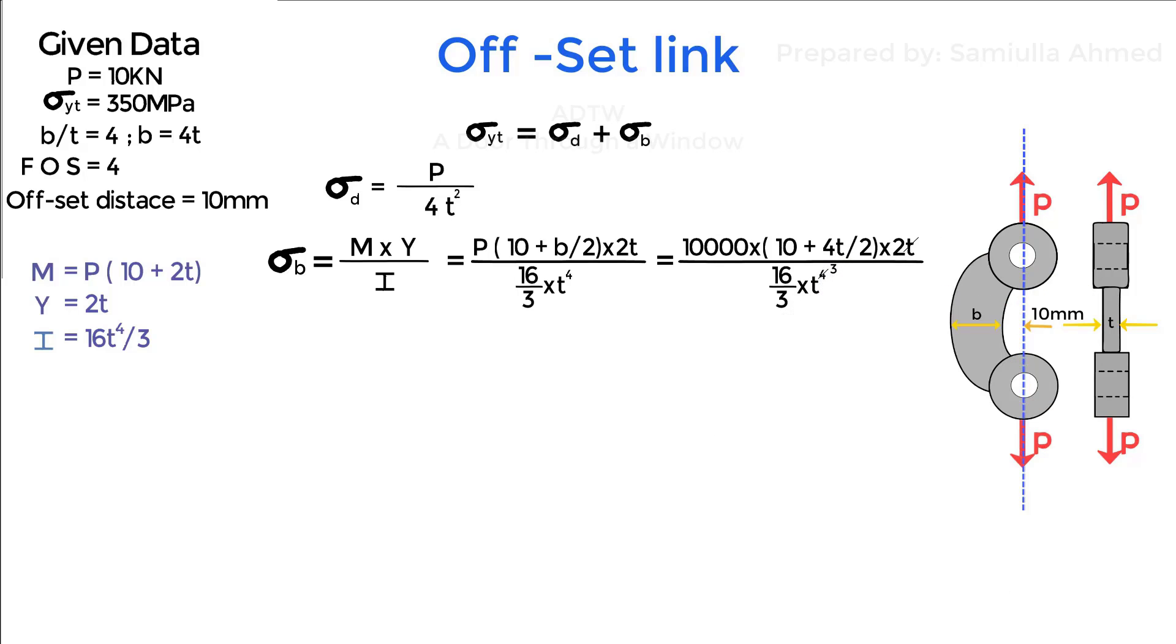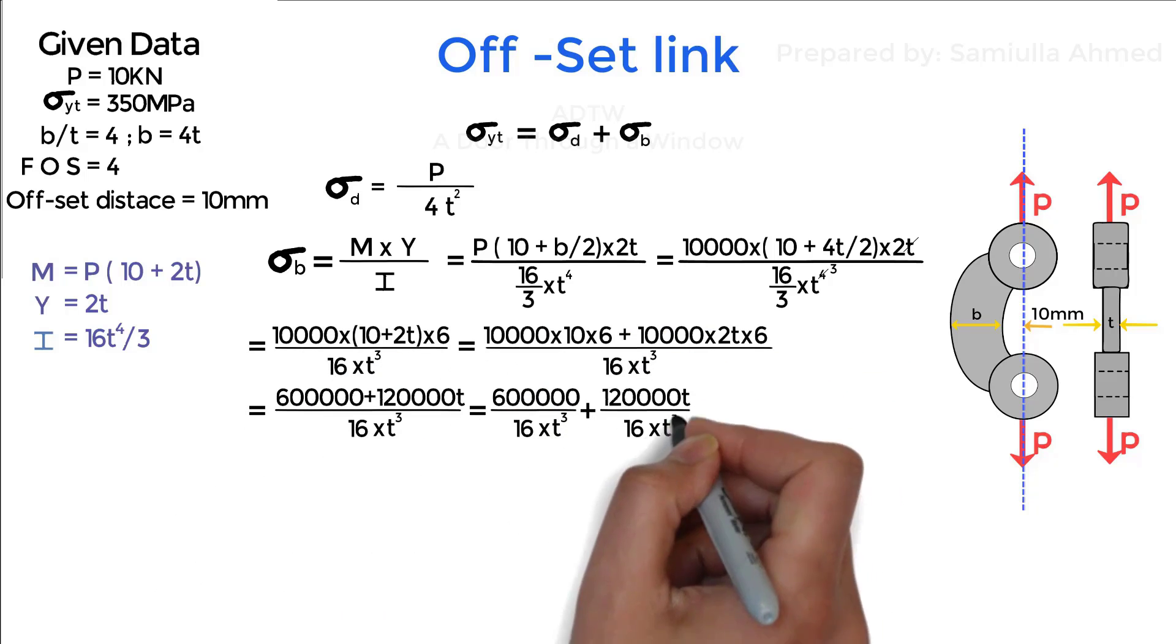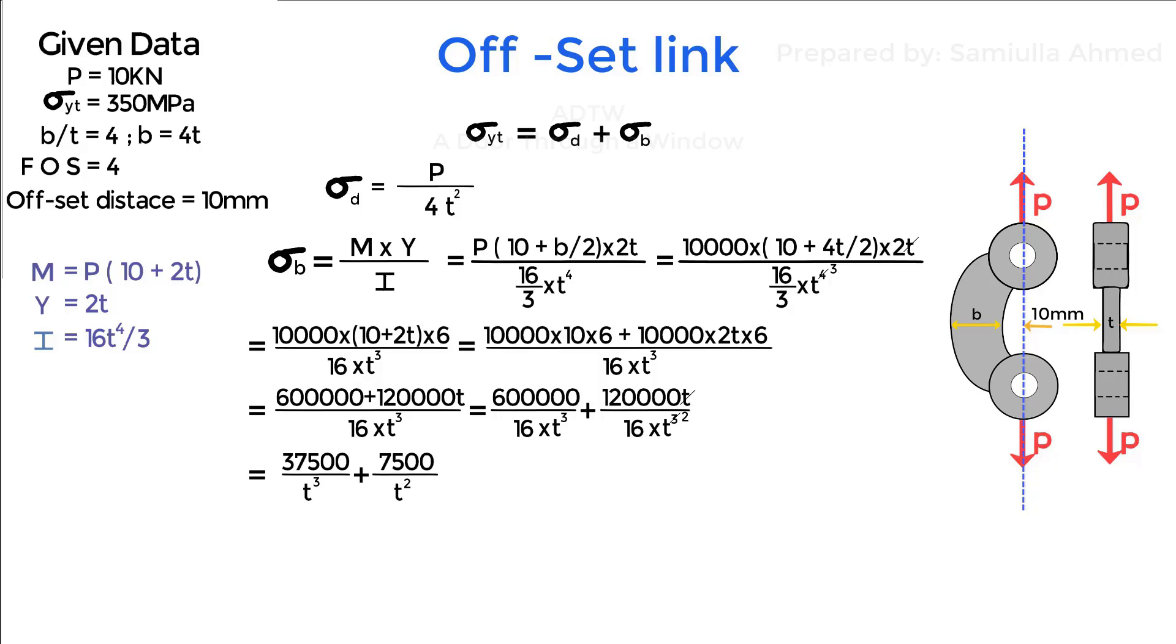Now we will multiply and simplify the equation. Therefore we get bending stress is equal to 37,500 by t cube plus 7,500 by t square.